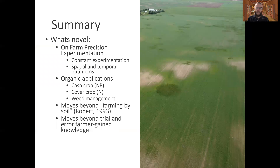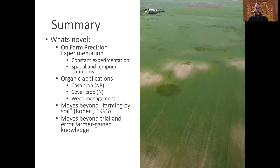To summarize: on-farm precision experimentation is a new methodology that we're working to help farmers with. This method of constant experimentation can help a farmer speed up their learning of their fields. We know farmers already know a lot about their fields, but OFPE can systematize that learning and experimentation to help the farmer harness the era of big data — using all these different data sources to optimize whatever input they'd like, whether that's the cash crop for net returns, the cover crop for nitrogen management, or any crop to determine the best weed management strategies based on seeding rate inputs. Collectively, this moves precision agriculture beyond simply farming by soil and allows farmers to understand variation at a deeper level.